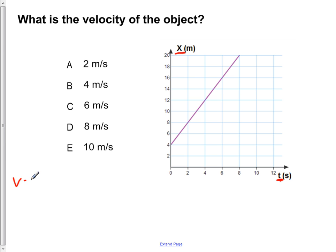We remember that velocity is equal to the change in position over the change in time. In other words, it is the slope of the position versus time graph.